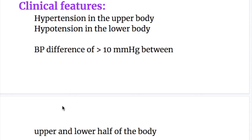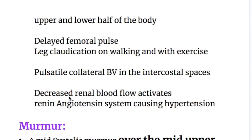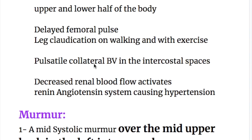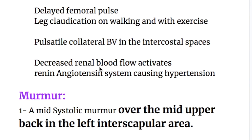The clinical features of coarctation of aorta include hypertension in the upper body and hypotension in the lower body. There are delayed femoral pulses and leg claudication on walking and with exercise. There are pulsatile collateral blood vessels in the intercostal spaces. Decreased renal blood flow activates the renin-angiotensin system, causing hypertension.